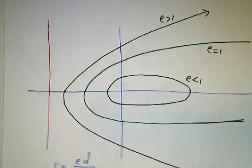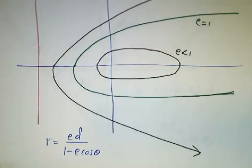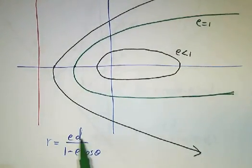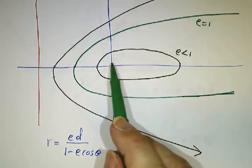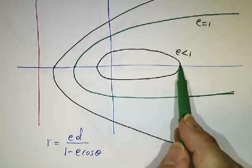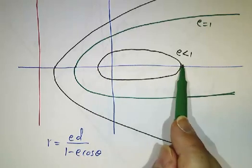So here's a picture of what's going on. So in all cases, we want r is ed over 1 minus e cosine theta. So the way to get the biggest value of r is to have the smallest denominator, and that's when cosine theta equals 0. So you get farthest away in the distance opposite the directrix. You open off to the right.